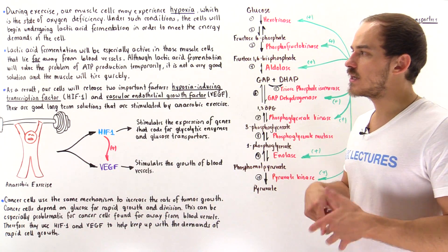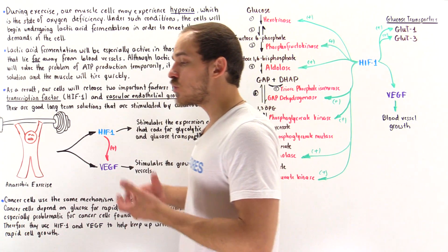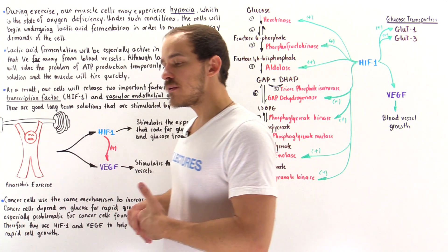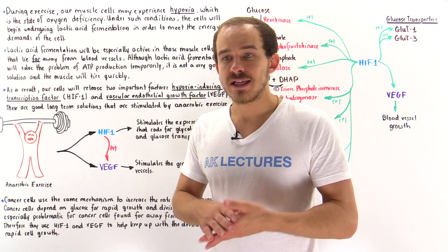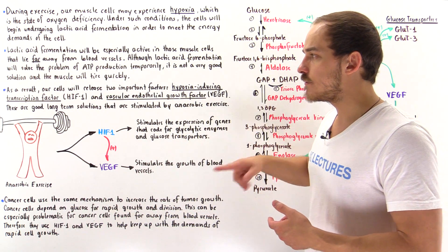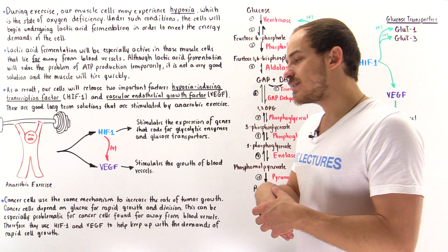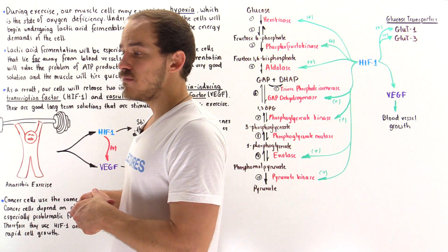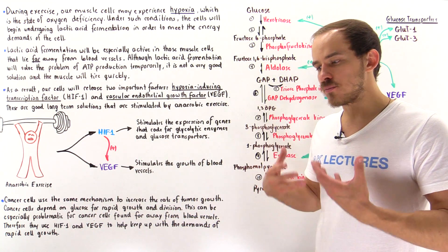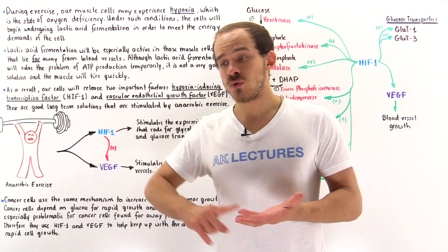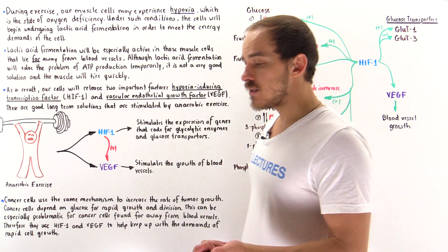Let's begin by discussing exercise. Suppose we begin to run, and initially we're running slowly. What that implies is the skeletal muscle cells will be able to get oxygen, and the oxygen will go around all the different types of skeletal muscle cells. To meet the high demand for ATP molecules, the skeletal muscles will begin the process of glycolysis — they will increase the rate of glycolysis, which produces ATP and pyruvate molecules.